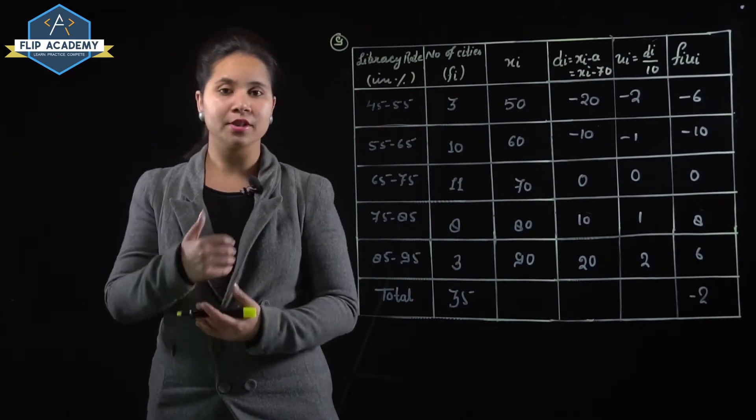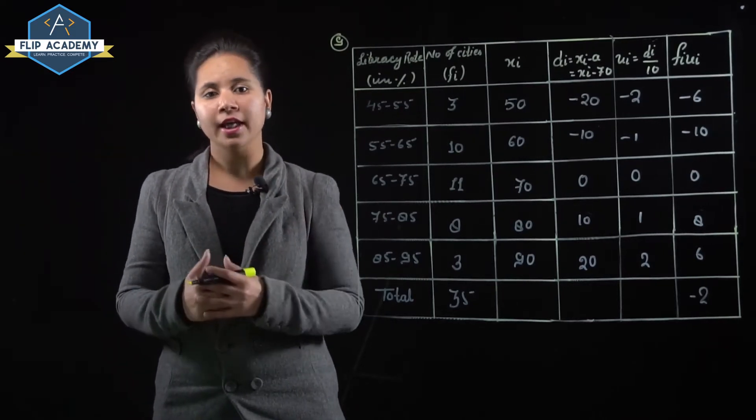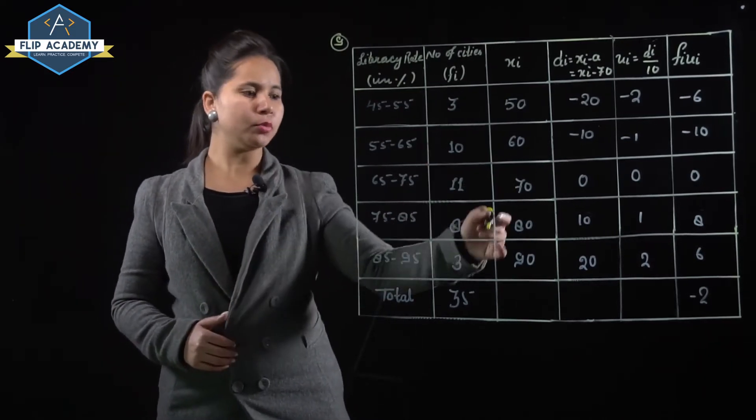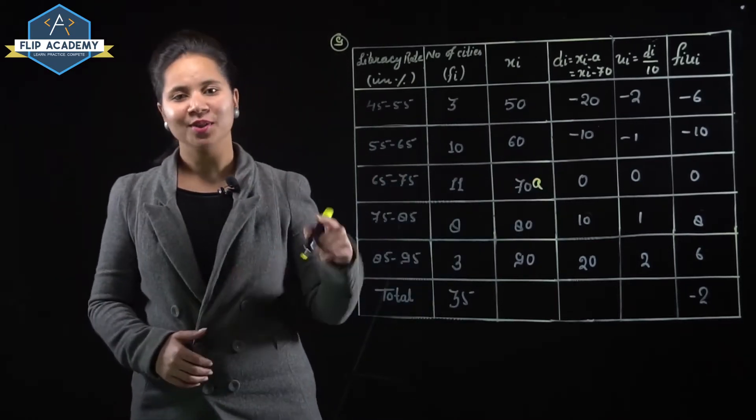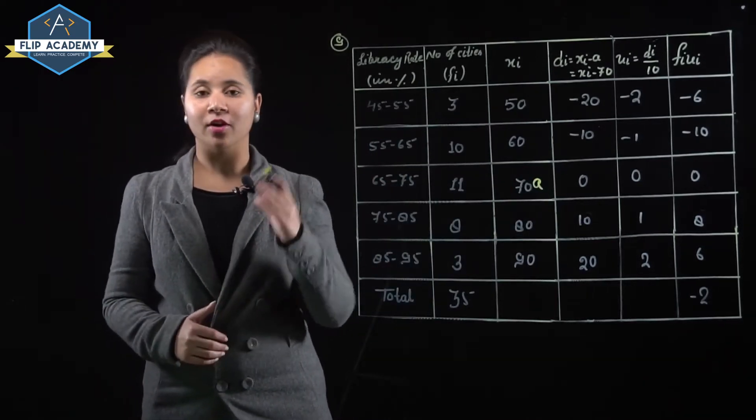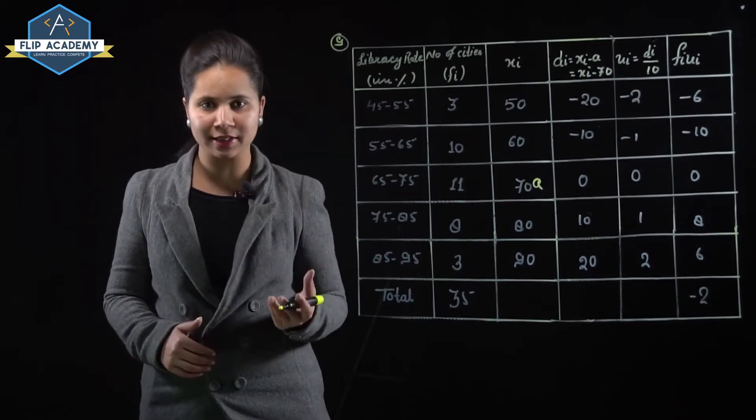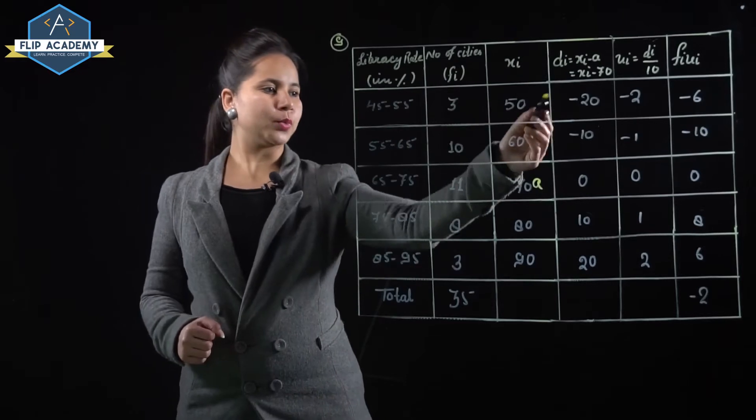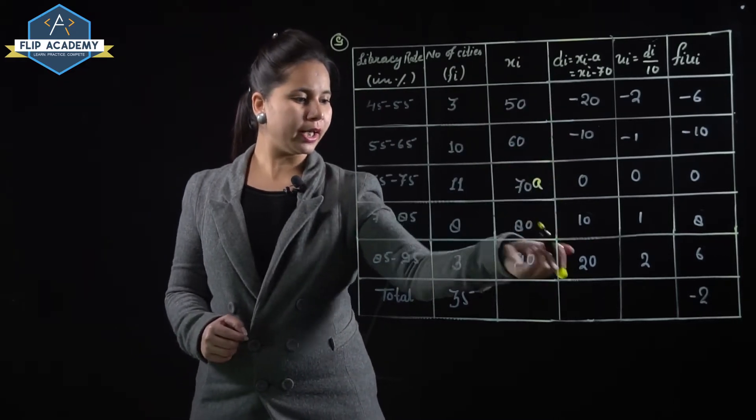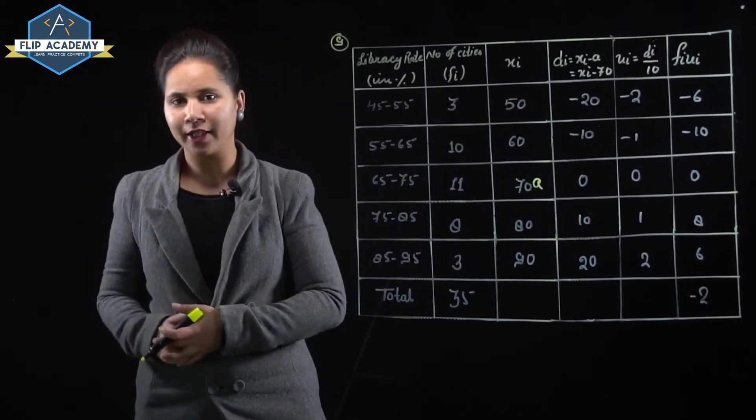Now deviation is calculated as class mark minus assumed mean. What is the assumed mean here? 70 is the assumed mean, so a value is 70. To calculate deviation, subtract assumed mean from class mark. Values are minus 20, minus 10, 0, 10, and 20. This gives us the di values.